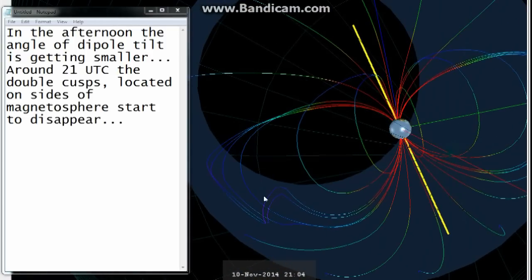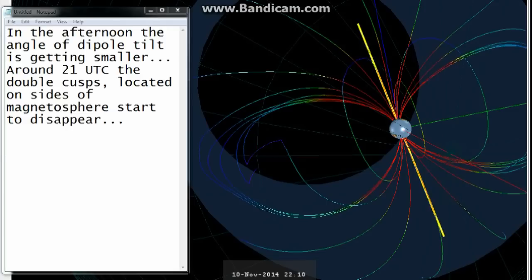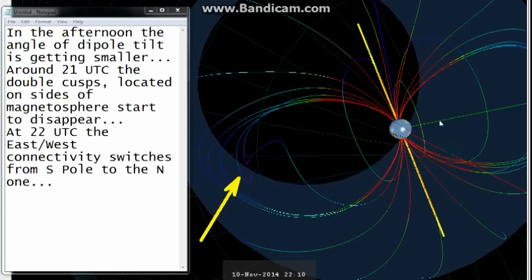Around 21 UTC, the double cusps located on sides of the magnetosphere start to disappear. At 22 UTC, the east-west connectivity switches from the south pole to the north one.